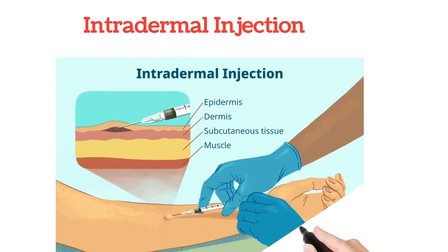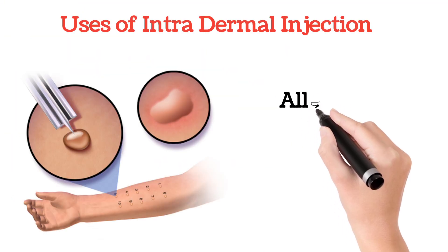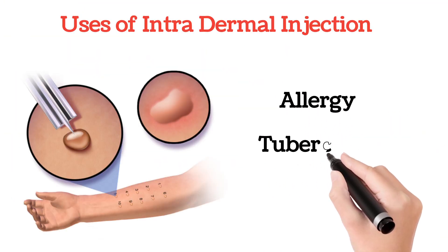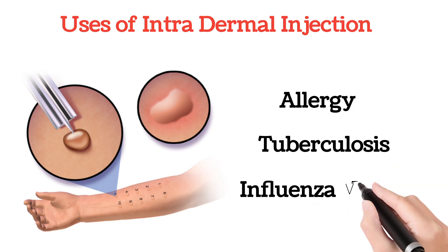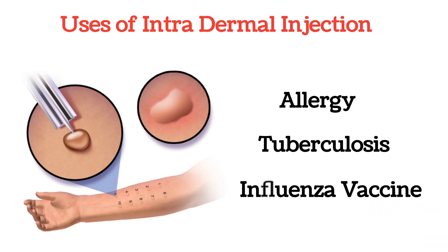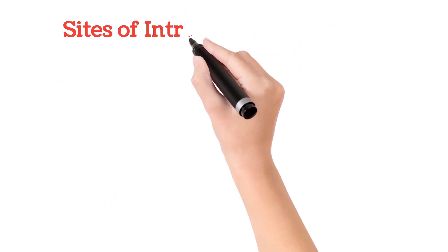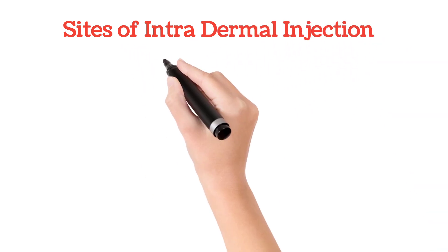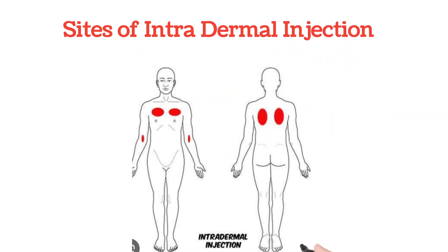Next comes the intradermal injection. In this, the injection is given below the surface of the skin, that is in the dermis. It has a low absorption rate and the response is obtained very slowly. Generally, allergy testing, tuberculosis testing, influenza vaccine — these are given through the intradermal route. Intradermal injection is given on areas like the inner surface of the forearm, upper chest, upper back, and the region under the scapula.